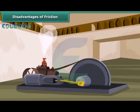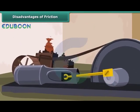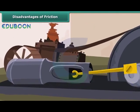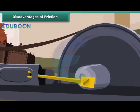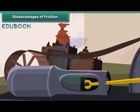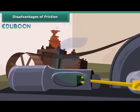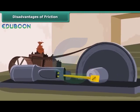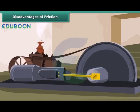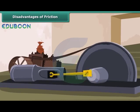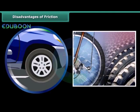Friction reduces the efficiency of machines. Some of the force applied to run a machine is lost in overcoming friction between its moving parts. When the moving parts of a machine rub together, a lot of heat is produced due to friction, which can damage the machine. Due to friction, the rubbing parts of a machine wear out gradually. The tyres of a vehicle also wear and tear due to friction.